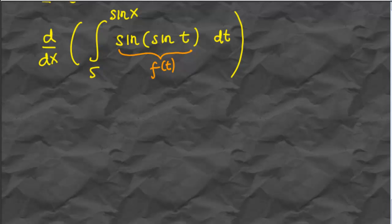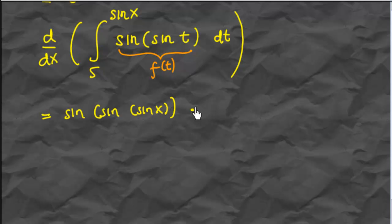Let's do one more example quickly. The derivative of that function is: substitute sin(x) for t to get sin(sin(x)), then multiply by the derivative of the upper limit, cos(x). It's as simple as that. I hope you enjoyed the video — see you later on the next video, bye-bye.